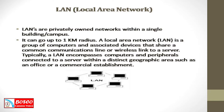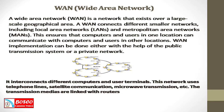A wide area network is a network that exists over a large-scale geographical area. A WAN connects different smaller networks, including local area networks and metropolitan area networks. This ensures that computers and users in one location can communicate with computers and users in other locations. WAN implementation can be done either with the help of the public transmission system or a private network. It interconnects different computers and user terminals. This network uses telephone lines, satellite communication, microwave transmission, etc. The transmission medias are linked with routers.